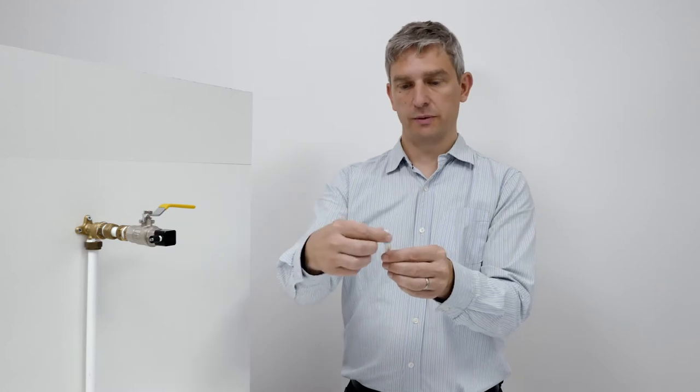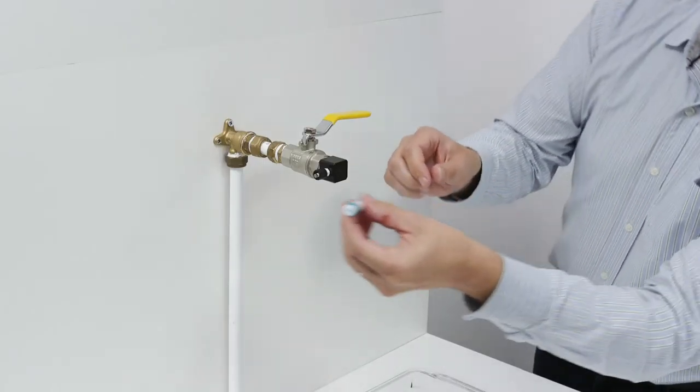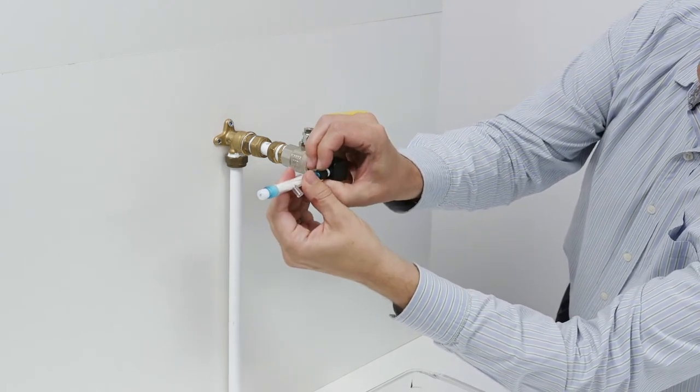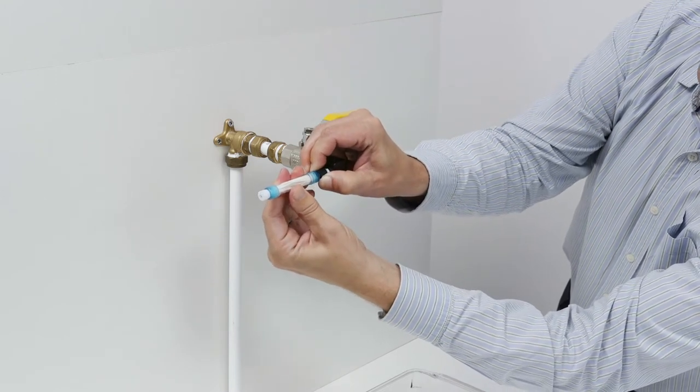Prior to doing that, we just need to check the top cap is tight, then attach the filter by pushing it in and then tightening the ring here to secure it.